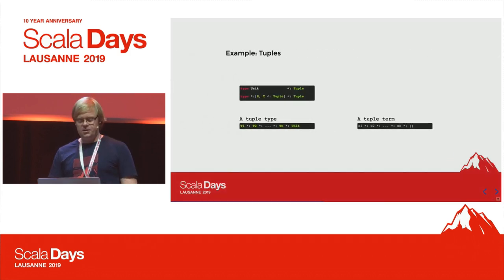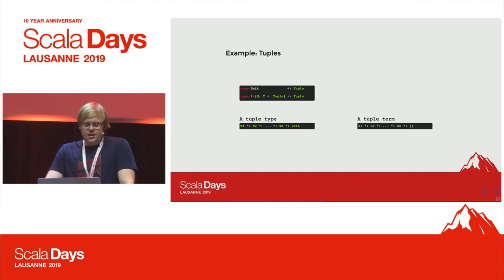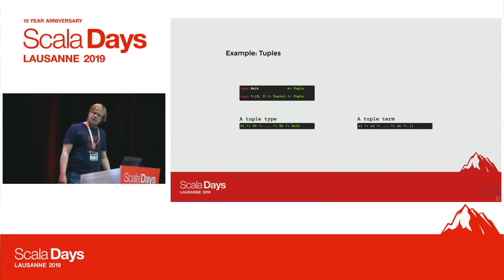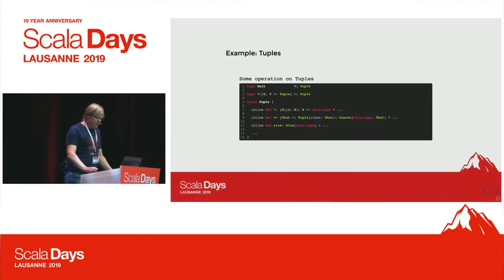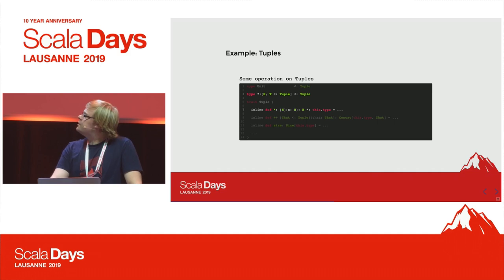For a more complex example, let's introduce a tuple abstraction where we have a Tuple which has two subtypes: Unit, which is kind of the tail terminator, and a cons operator with star-colon that has a head type and a tail type. We construct tuples by composing those types. Now we add some interesting operations. The first one is the cons operator — we inline it to produce actual code, and the return type is a cons type, trivially the definition of cons. But what happens if we go to concat? Traditionally we wouldn't have a direct way to express the type corresponding to two tuples concatenated.